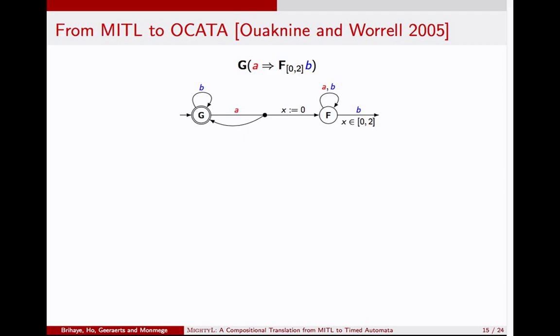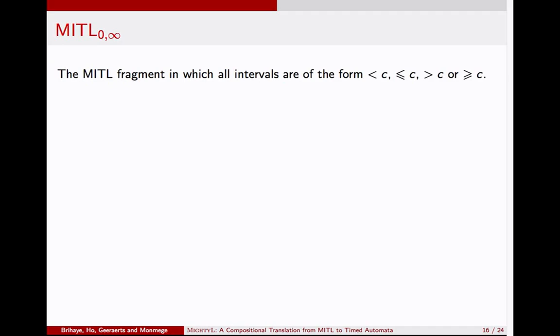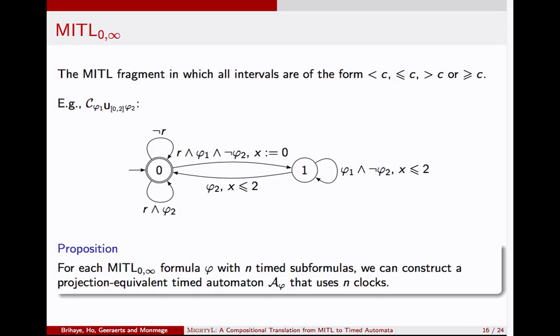For timed formulas in MITL, we can translate them into OCATA, one-clock alternating timed automata. We also have this tree structure. In this case, it doesn't seem obvious how to merge these locations, because they now all carry clock values. But in this case, we can simply keep this one, because this interval here is downward closed. It's unbounded in one direction. So we can only keep this one, because this one will imply all the others. For the fragment of MITL in which all the intervals are of this form, unbounded in one direction, the construction is not very difficult. We can state that if there are n timed subformulas in your whole MITL formula, then we can construct a timed automaton that uses only n clocks.